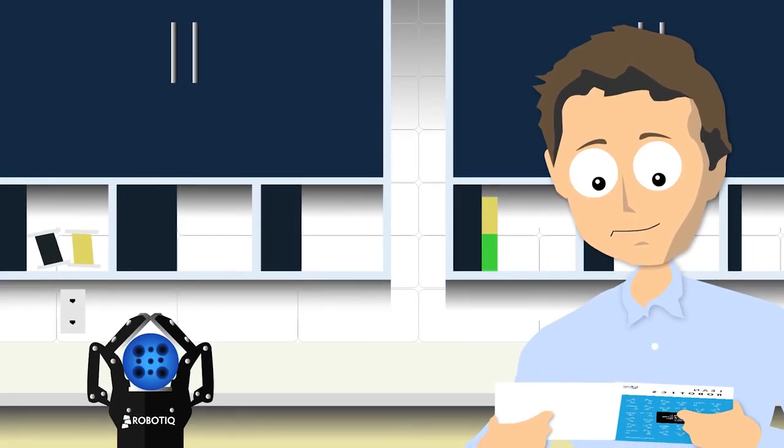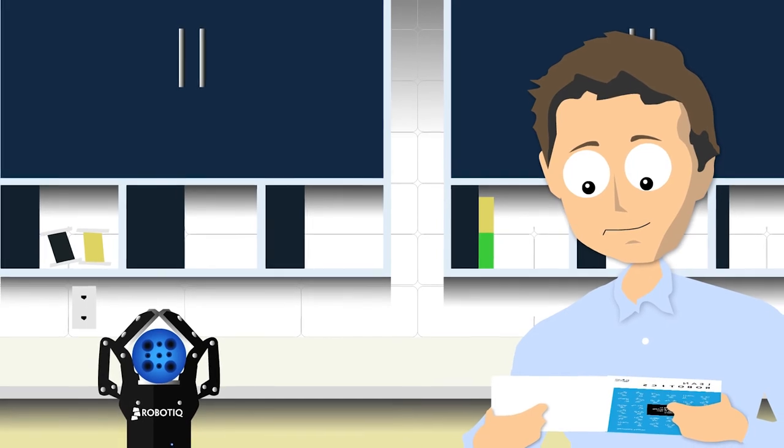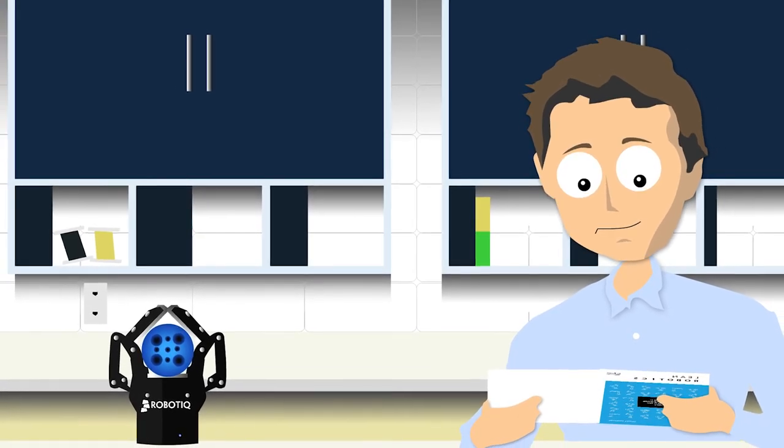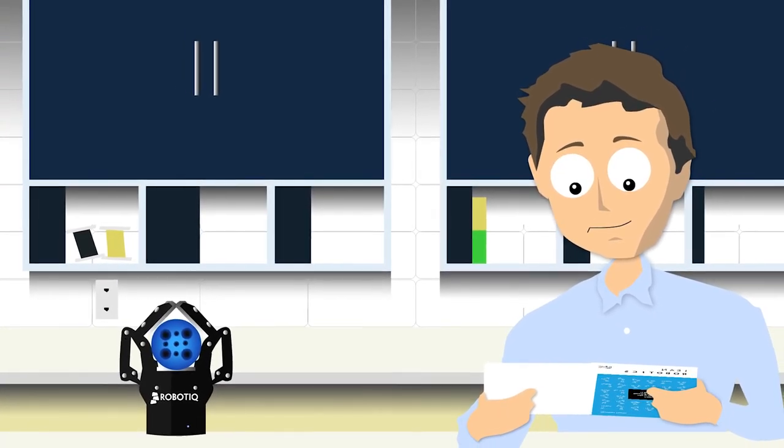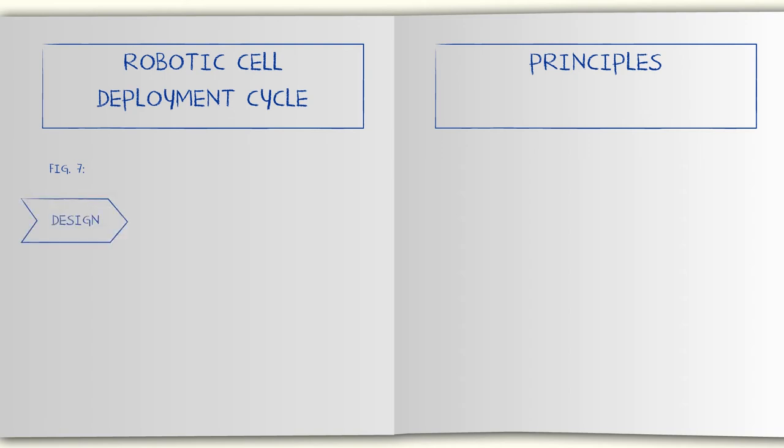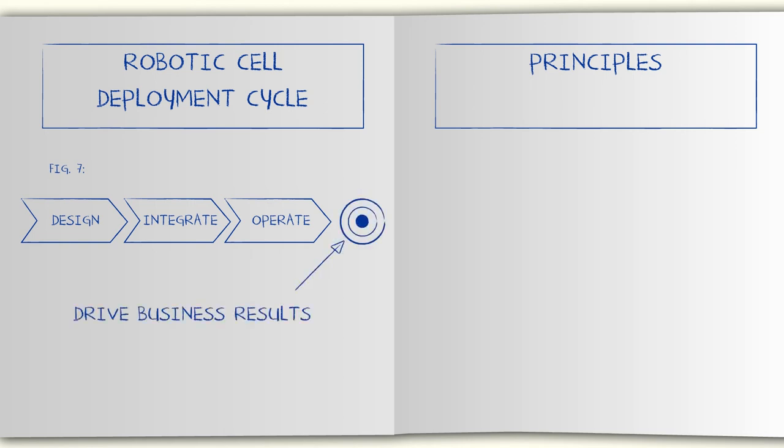Lean Robotics is a set of principles developed by Robotiq CEO Samuel Bouchard. In his book, Sam and his team lay out an efficient and cost-effective method to deploy robots in factories with the goal of achieving a quick return on investment to the manufacturer.